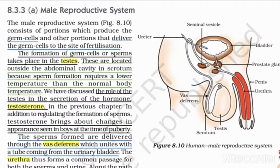One is it produces the germ cells, and the second point is it delivers the germ cells to the site of fertilization. Where the fertilization occurs, the germ cells are delivered there. These are the two main important points for the male reproductive system.